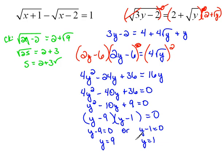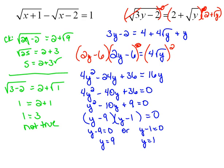We also have to check the other one. If we check the 1, then that would say the square root of 3 times 1, which would be 3, minus 2, equals 2 plus the square root of 1. 3 minus 2 is 1. Square root of 1 is 1, equals 2 plus the square root of 1 is 1. And that says 1 equals 3, and that is not true. So that tells us that this 1 is an extraneous solution. But the 9 did work.